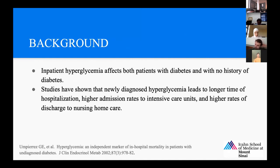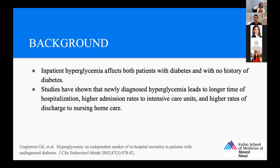A little bit of background. Inpatient hyperglycemia affects patients both with diabetes and with no history of diabetes. It's important to recognize that in the hospital, both hyper and hypoglycemia are associated with adverse outcomes, even including death. Therefore, our inpatient goal should include the prevention of both. As a presence in the hospital, we want to promote the shortest safe hospital stay and effective transition out that prevents any acute complications or readmission. For patients without diabetes, hyperglycemia may have a worse outcome. Studies have shown that newly diagnosed or stress hyperglycemia leads to longer hospitalization, higher ICU admission rates, and higher rates of discharge to long-term care homes. Our goal is always to establish a protocol for structured patient care and order sets to avoid hyper and hypoglycemia.